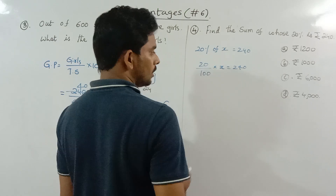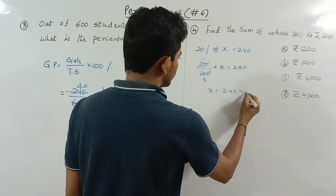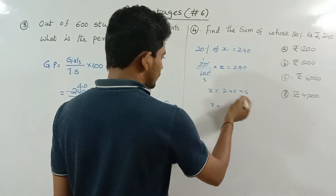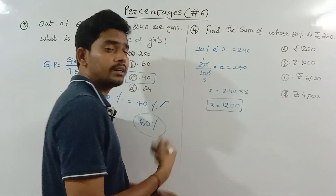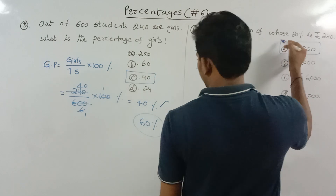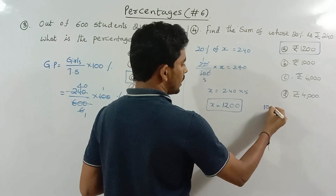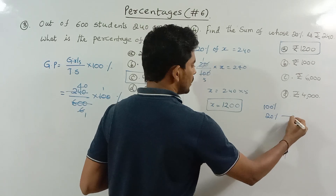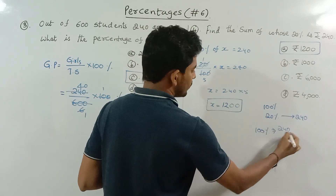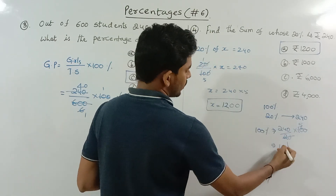So x equals 240 multiplied by 100 divided by 20, which gives x equals 1200. The whole number is 100%. If 20% equals 240, then 100% equals 240 divided by 20, into 100 — that is 1200. So the number is 1200. Verification: 20% of 1200 is 240. Correct.